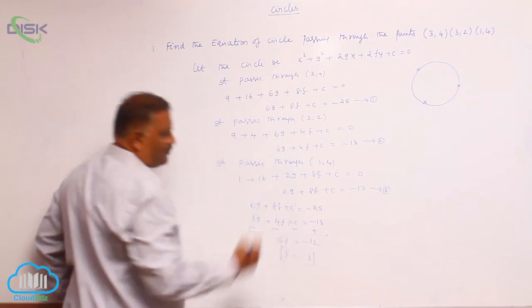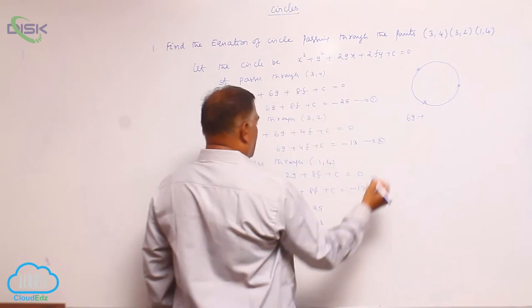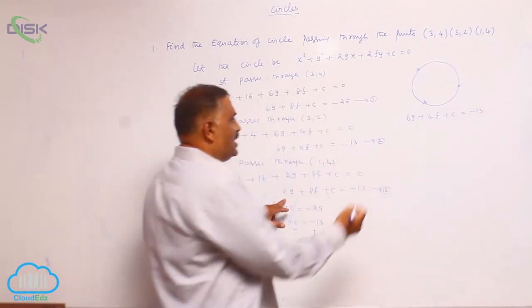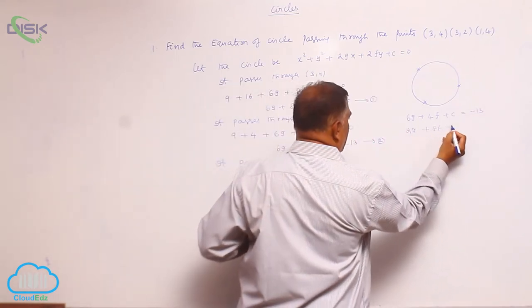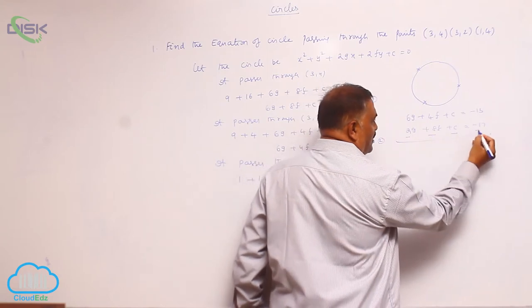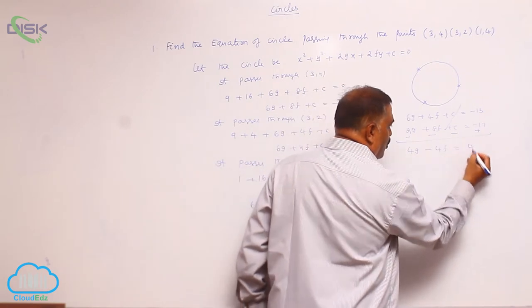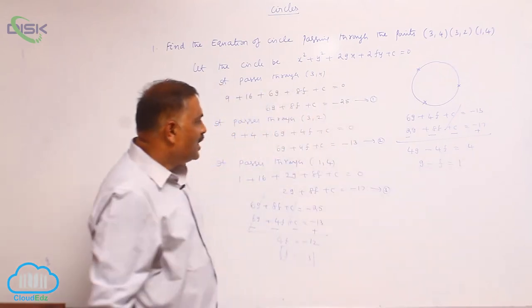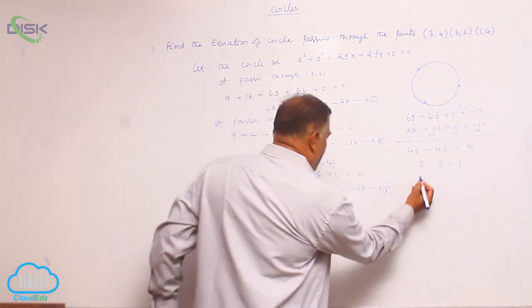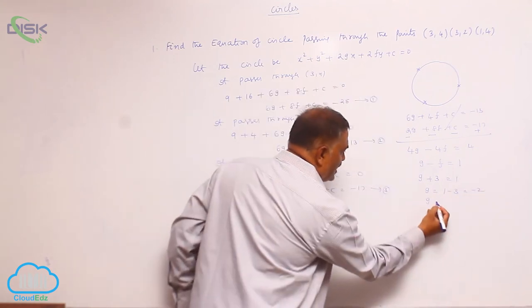Now subtract equations 2 and 3 so that c gets cancelled. Equation 2: 6g + 4f + c = −13. Equation 3: 2g + 8f + c = −17. Subtracting gives 4g − 4f = 4, so g − f = 1. We already know f = −3, so substituting: g + 3 = 1, which gives g = −2.